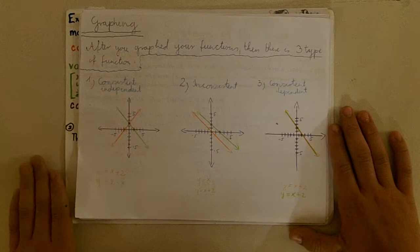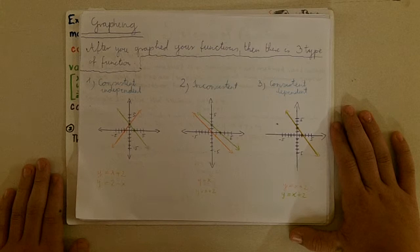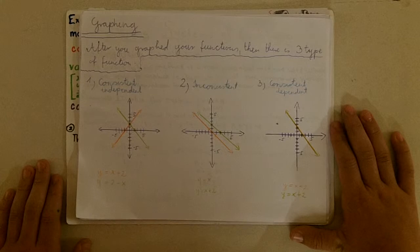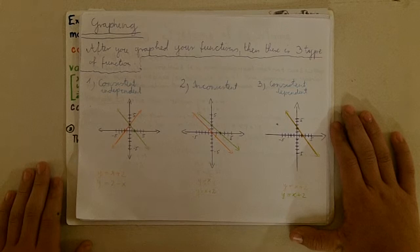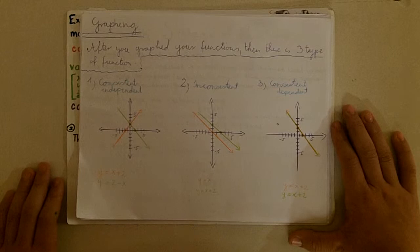The second part of graphing — after you've graphed your functions — there are three different types of graphs. There's consistent and independent, where they intersect at one point; for example, y equals x plus 2 and y equals 2 minus x. There's inconsistent, which is when they're parallel — like y equals x and y equals x plus 2 — and they'll never intersect. And then consistent dependent, which is when the lines are the same line, so y equals x plus 2 and y equals x plus 2, meaning all points on the line are a solution.